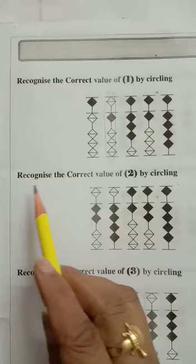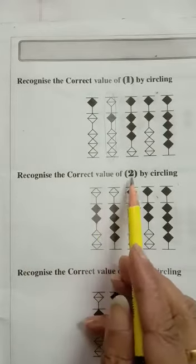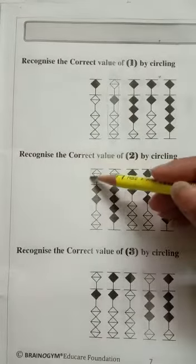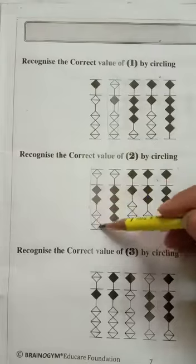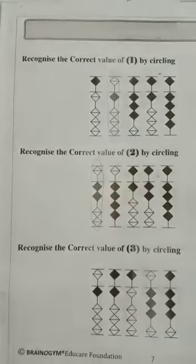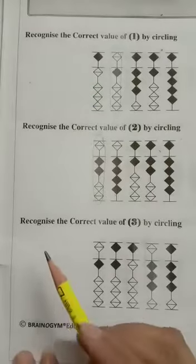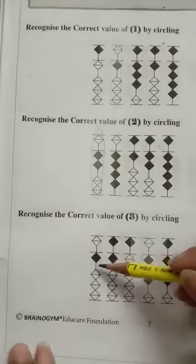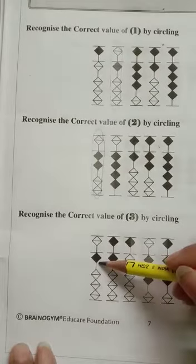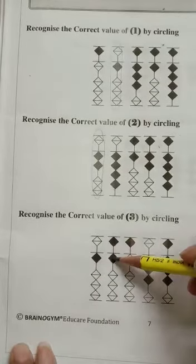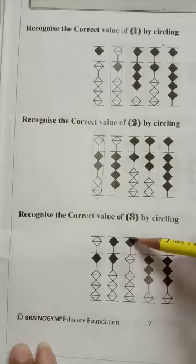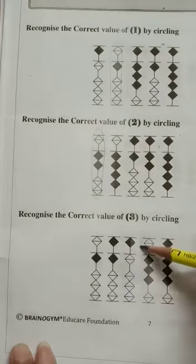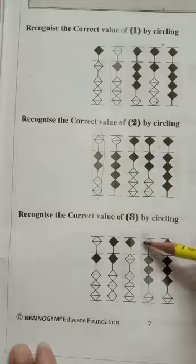Now recognize the correct value of two by circling. Is it one? Two — yes, this one is the correct value, so we have to circle it. Recognize the correct value of three by circling. Here is one — this is wrong. Five, six — wrong. Five — wrong. One, two, three — yes, this one is the correct value, so we have to circle it.